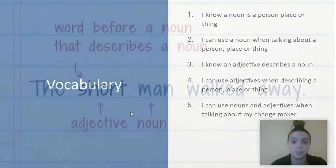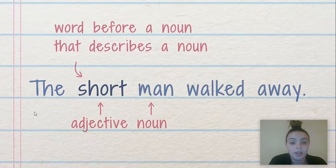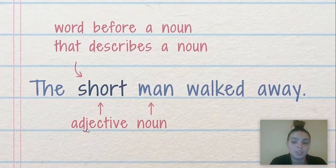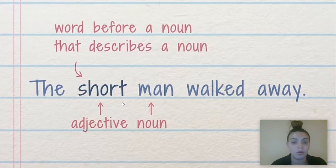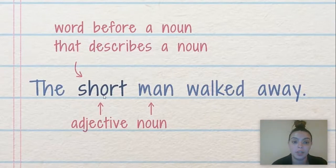So let's get started with our language practice. Here I have a sentence: 'The short man walked away.' If I know that a noun is a person, place, or thing, I know that 'man' would be my noun because a man is a person. And if I know that an adjective is a word that describes a noun, my adjective is 'short.' What kind of man? A short man. Kip says a lot of times, but not every time, the adjective will come before the noun — the describing word comes in front of the word that it's describing.